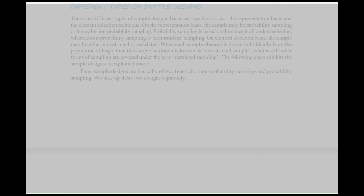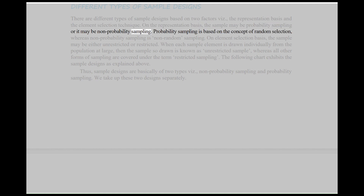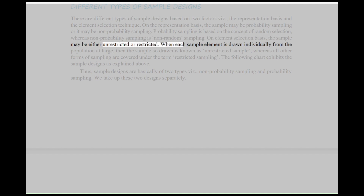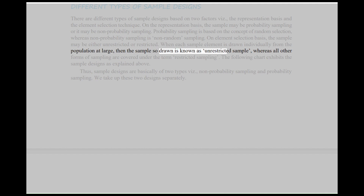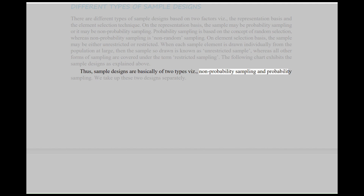Different types of sample designs: There are different types of sample designs based on two factors — the representation basis and the element selection technique. On the representation basis, the sample may be probability sampling or non-probability sampling. Probability sampling is based on the concept of random selection, whereas non-probability sampling is non-random sampling. On element selection basis, the sample may be either unrestricted or restricted. When each sample element is drawn individually from the population at large, the sample so drawn is known as unrestricted sample, whereas all other forms of sampling are covered under the term restricted sampling. Thus, sample designs are basically of two types: non-probability sampling and probability sampling.